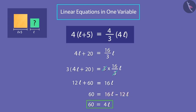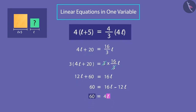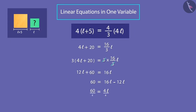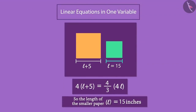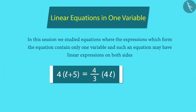Now, we get an equation of a known form — variables on one side and constants on the other. To find the value of L, let's divide both sides by 4. Finally, we get the value of L as 15. So, the length of the smaller paper is 15 inches. We learned that linear equations with one variable can be solved even when the variable exists on both sides.